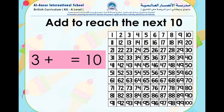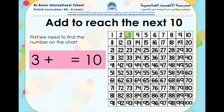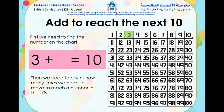Now we are going to add to reach the next 10. First we're going to look for the number on the number chart. The first number is 3. We look at 3 and we want to reach the number 10, because that is the next 10. How many blocks do we need to count to reach 10? We can count 1, 2, 3, 4, 5, 6, 7. So we need to count 7 to reach 10, and we can say 3 plus 7 equals 10.